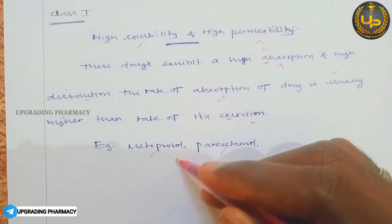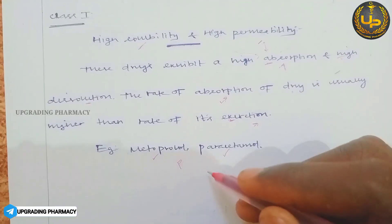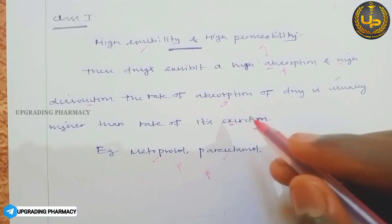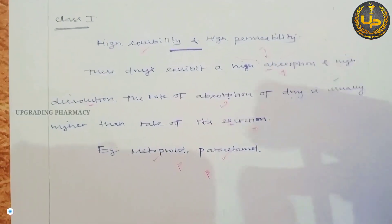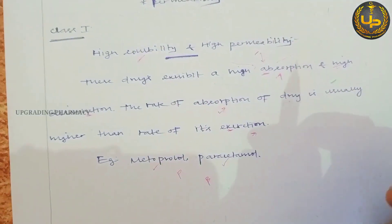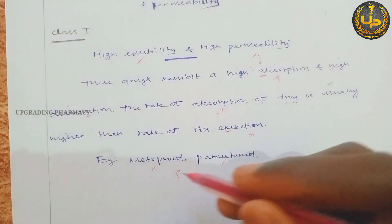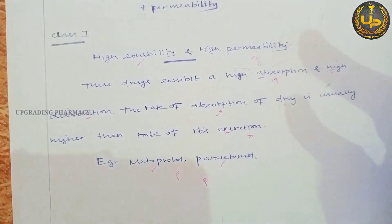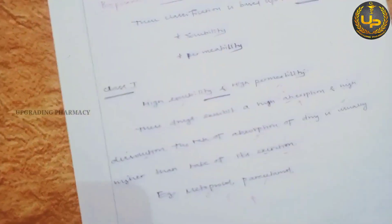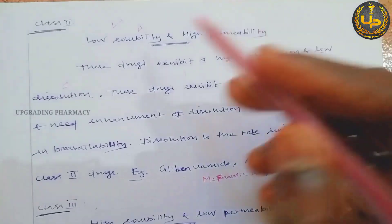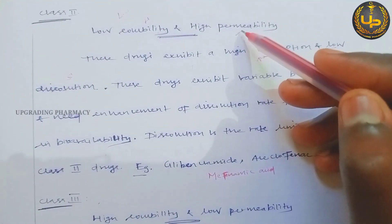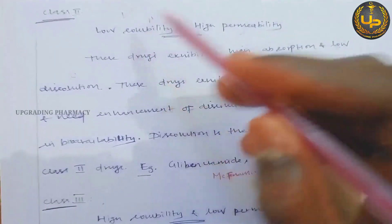Examples of Class 1 drugs include metoprolol, paracetamol, and propranolol. These are some beta blockers and NSAIDs with good bioavailability — easily soluble and easily permeable.